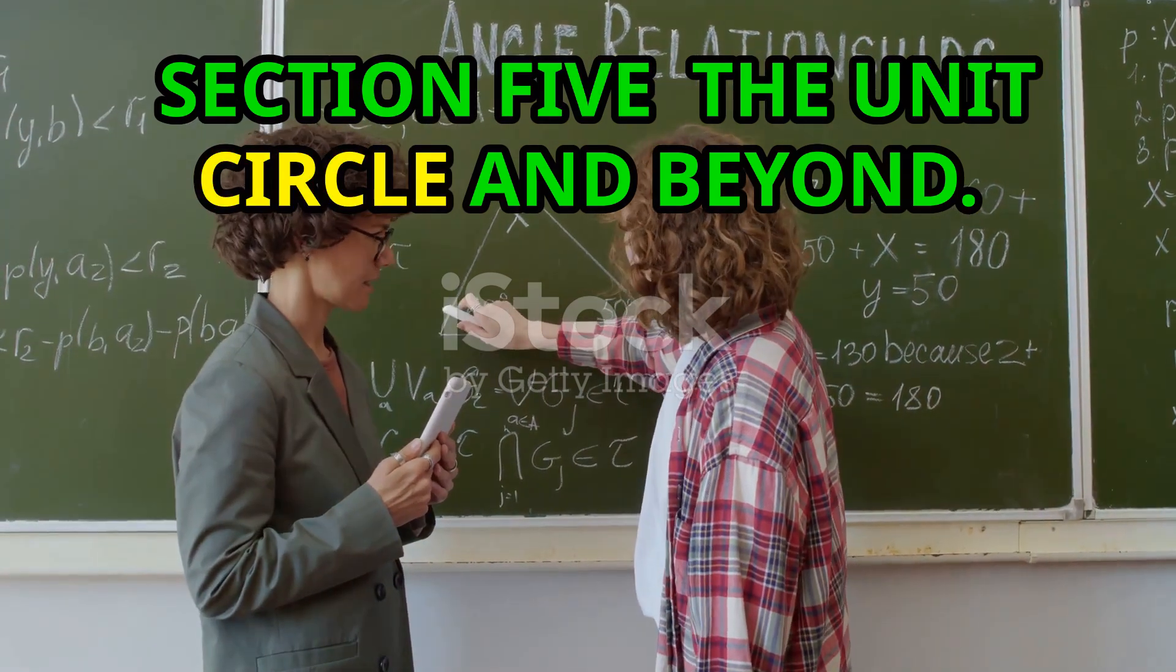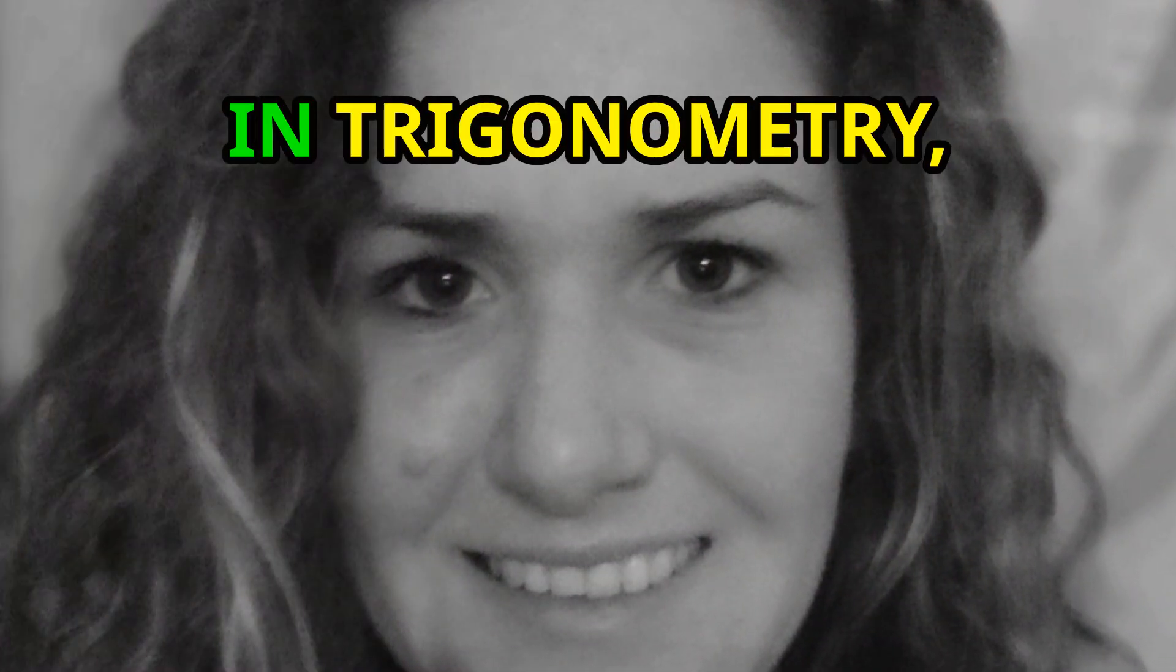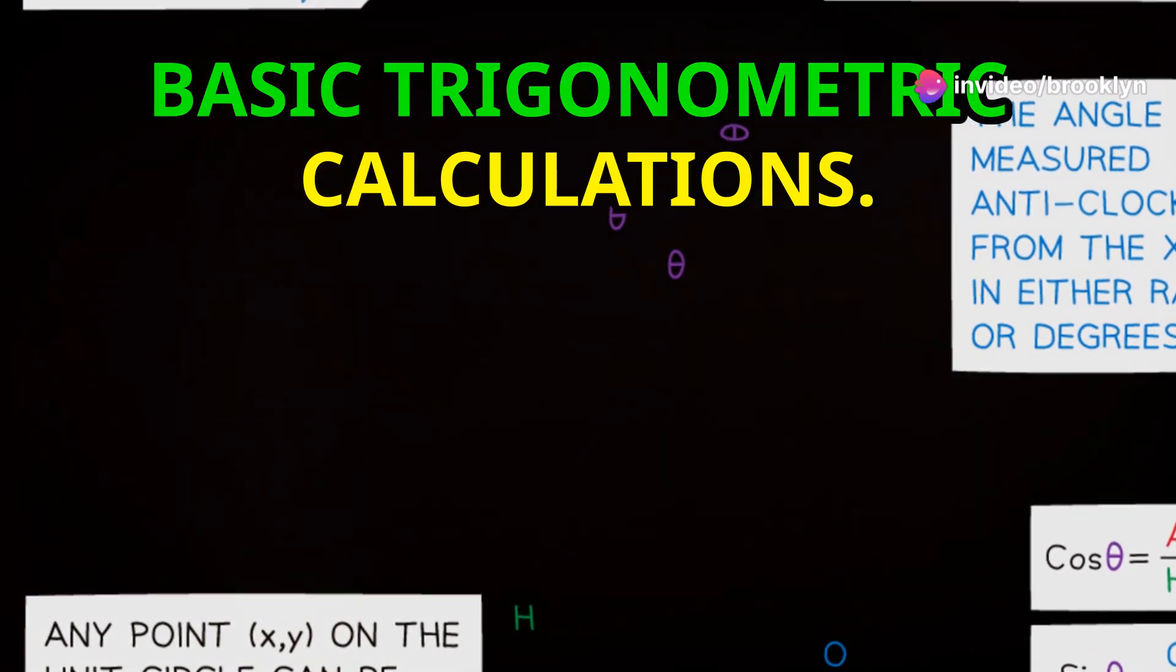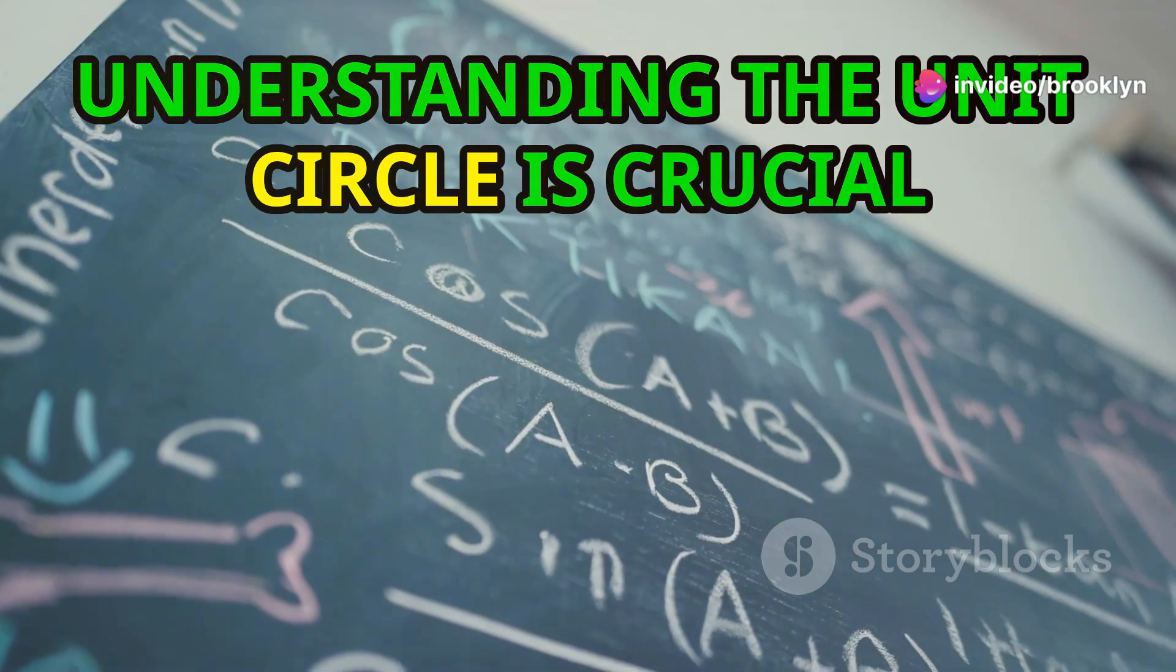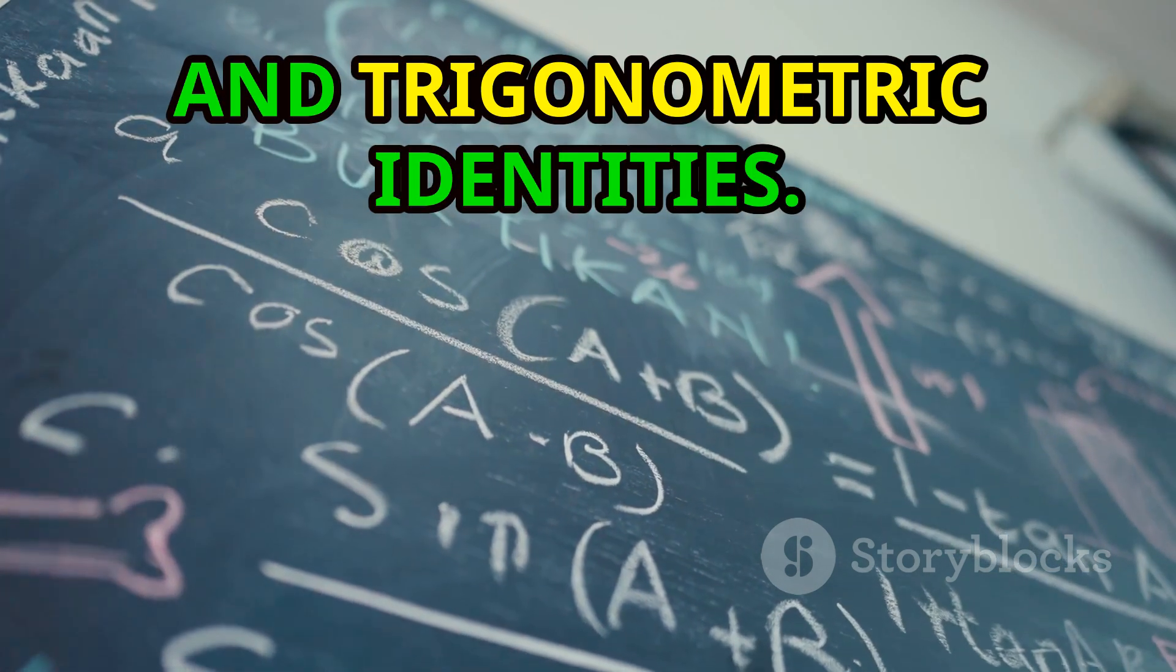Section 5: The Unit Circle and Beyond. The Unit Circle is a fundamental concept in trigonometry and its applications extend far beyond basic trigonometric calculations. Understanding the Unit Circle is crucial for working with complex numbers, polar coordinates and trigonometric identities.